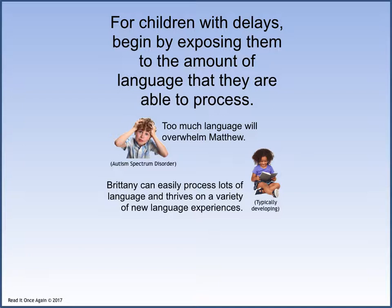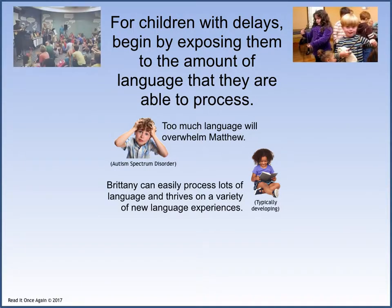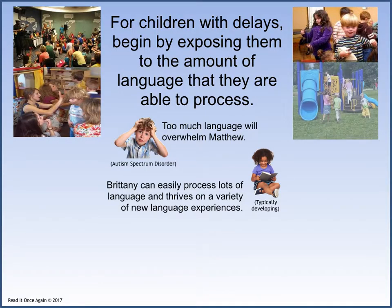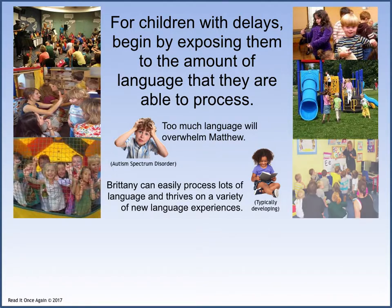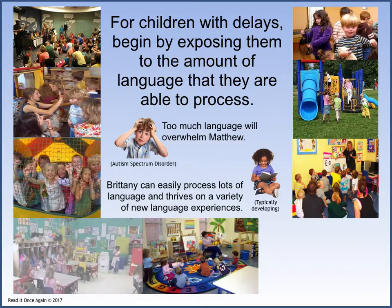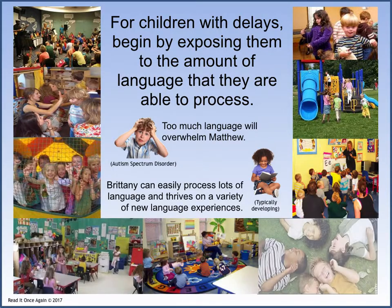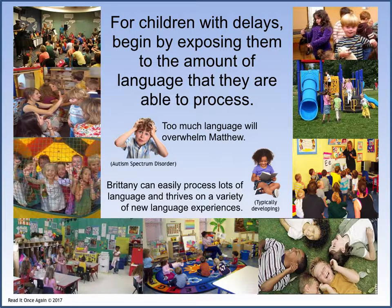If children like Matthew, Pedro, Tyler, or Amanda could process language like Brittany, they would not be exhibiting language delays and difficulty retaining foundational skills. They need a different approach with techniques that will give them the skills to process language and retain foundational skills. Read It Once Again uses repetition along with a controlled vocabulary to meet each child at their individual language level and provide the techniques to help them build foundational skills to meet their highest potential.